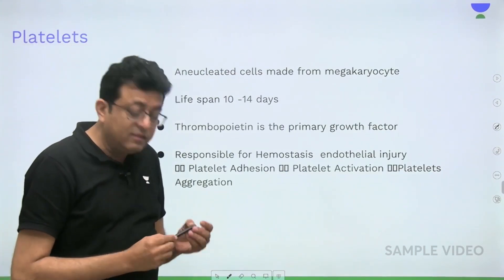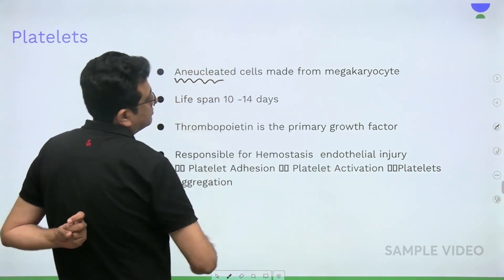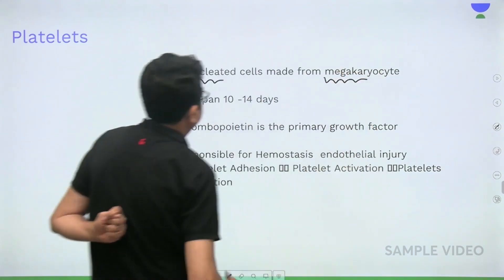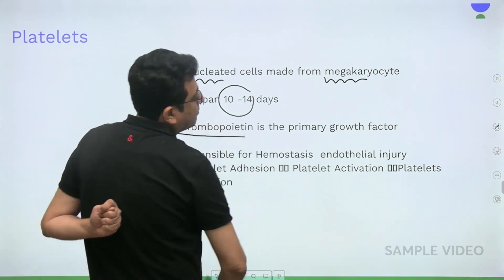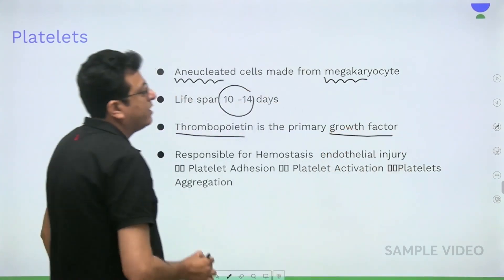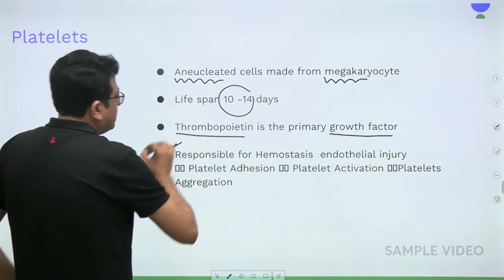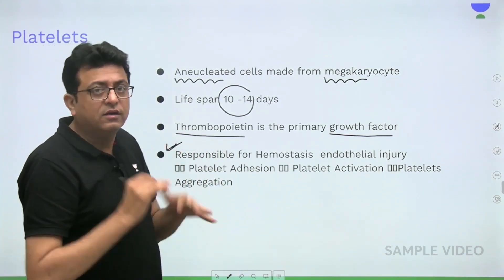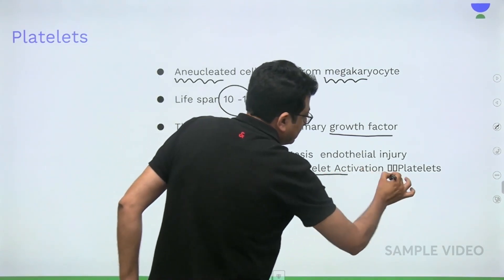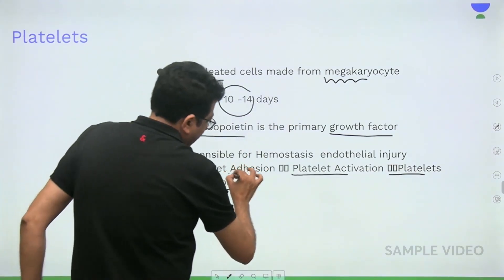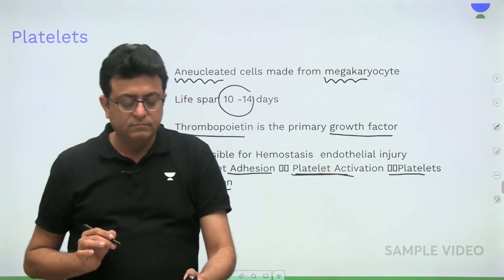Platelets are anucleated cells derived from megakaryocytes. Their half-life is 10 to 14 days. Thrombopoietin is the primary growth factor for platelets, just as erythropoietin is for erythrocytes. Platelets are responsible for hemostasis after endothelial injury, through platelet activation followed by platelet aggregation.